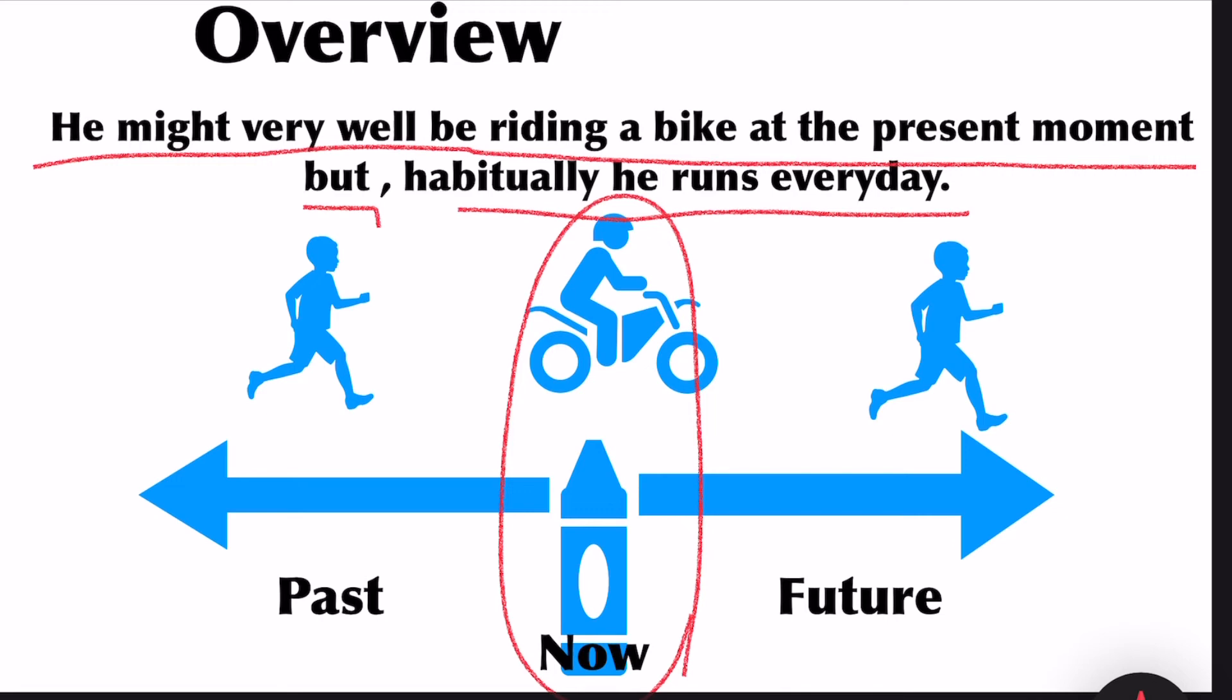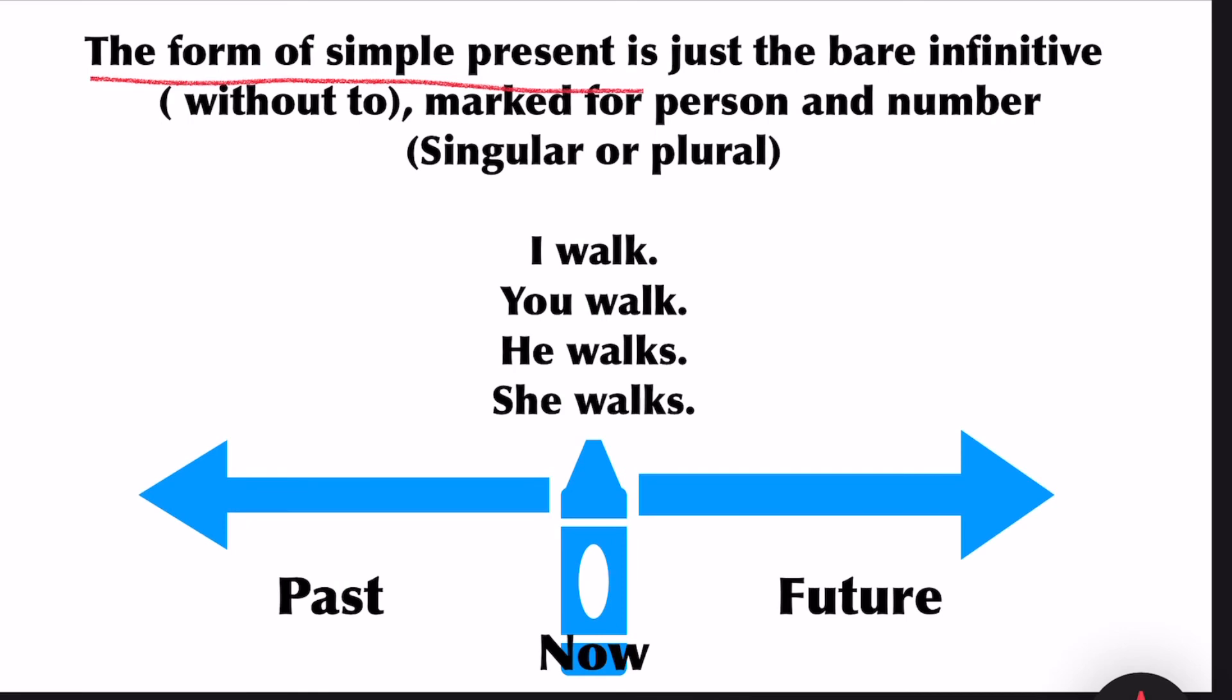So to express an everyday action you have to use simple present tense. The form of simple present is just a bare infinitive without 'to' marked for person and number, that is singular or plural.